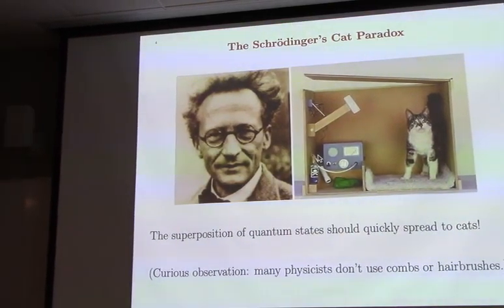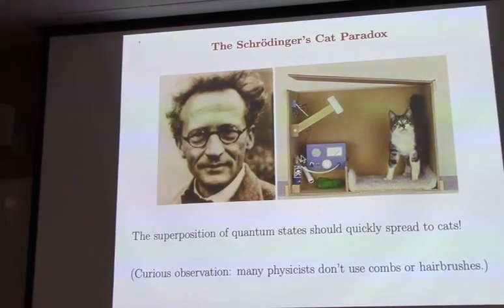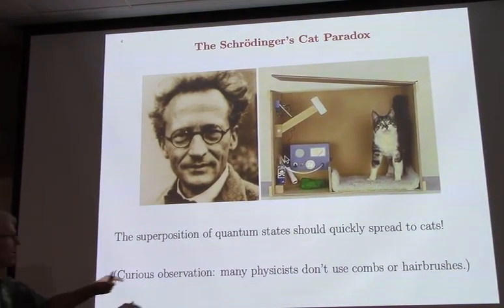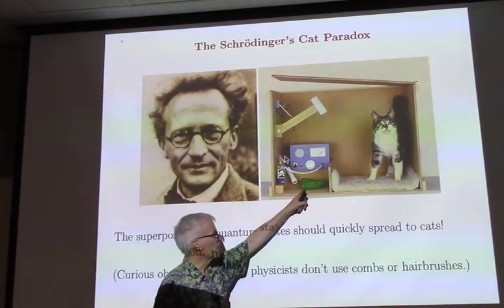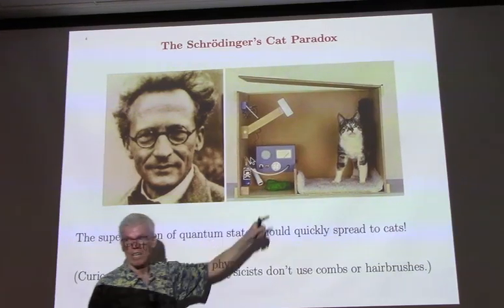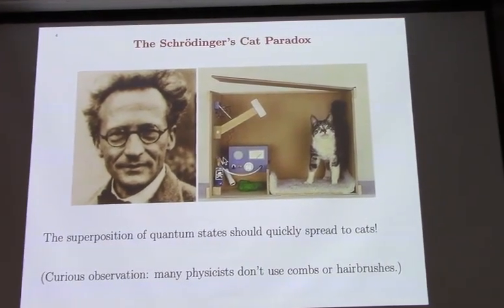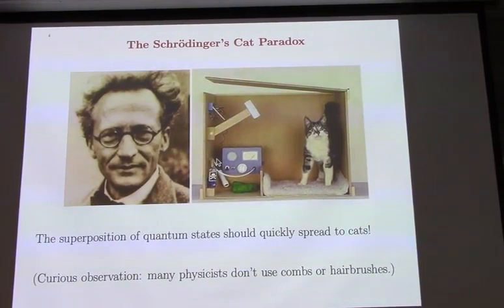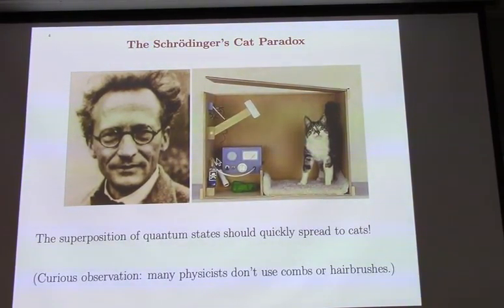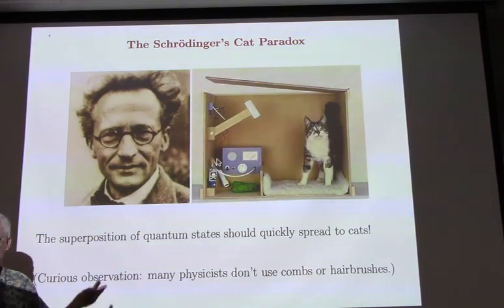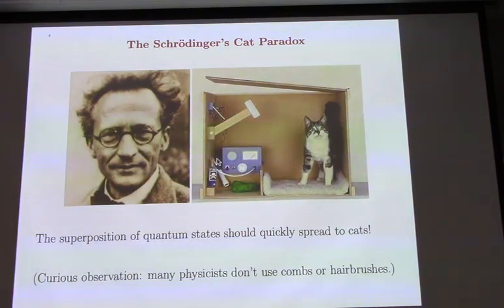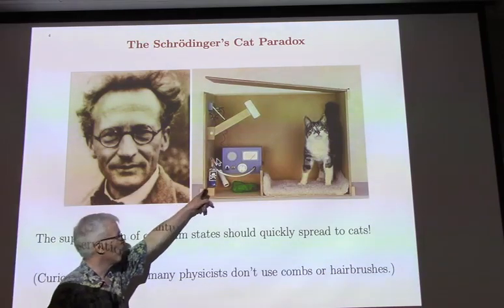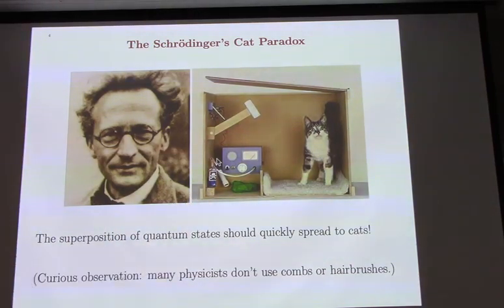This is Erwin Schrödinger and his famous cat. This is the most famous paradox. You've got a cat in a box and there's a radioactive material here. If a nucleus decays, quantum mechanics says it goes into a superposition state of being decayed and not being decayed, a quantum superposition. The Geiger counter picks that up. In principle, according to quantum mechanics, the Geiger counter goes into a superposition of detecting and non-detecting. And then the Geiger counter triggers this hammer to fall and release poison gas, which kills the cat.